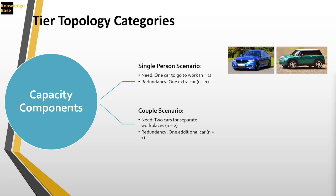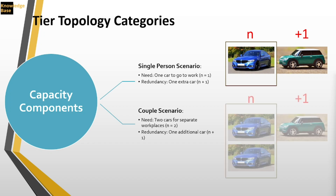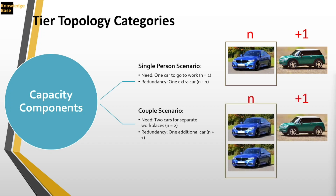If I want an N+1 redundancy, he buys another car — N plus one. Now he has one car plus one standby. After a few years he has a partner, and now both go to work, so their need is two cars. N+1 is still another car, giving three cars total — two N plus one — which is still a redundant solution.